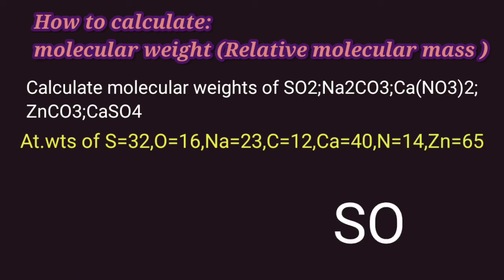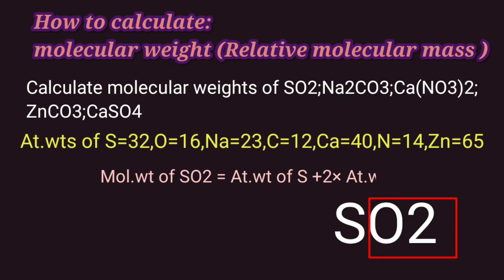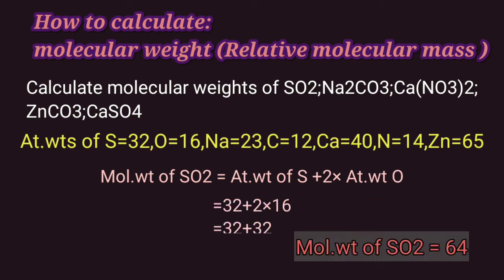Molecular weight of sulfur dioxide is equal to atomic weight of sulfur plus 2 into atomic weight of oxygen. So we have 32 plus 2 into 16, which gives us 32 plus 32, which is 64. So molecular weight of sulfur dioxide is 64.